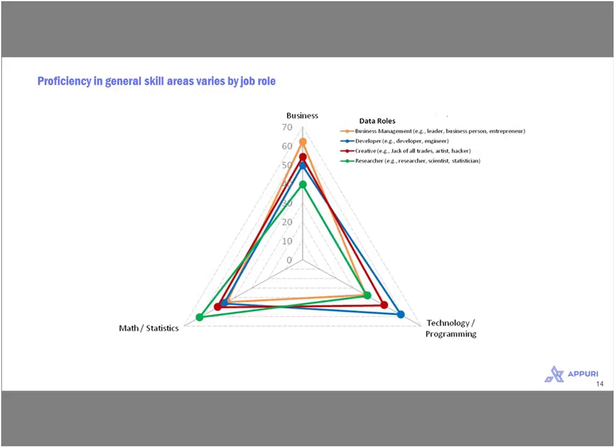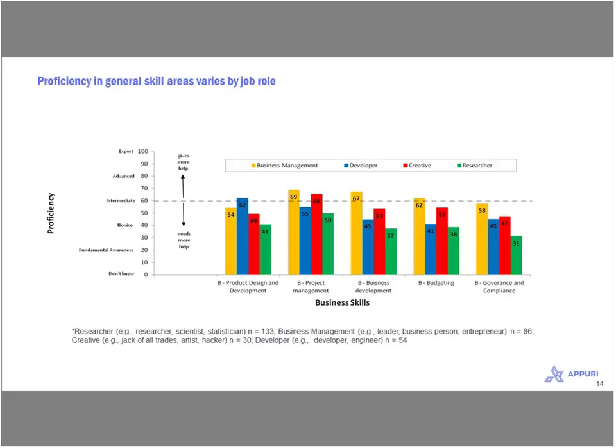Instead of the classic Venn diagram of three overlapping circles with data science in the middle, I like to think of data science more like a bar chart — it's a variety of skills you can have. You may possess more than one, but think of skills as being independent. You can learn a lot about stats and not know anything about programming and technology, which is fine, and vice versa.